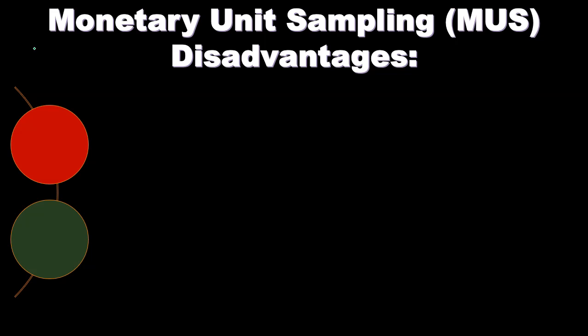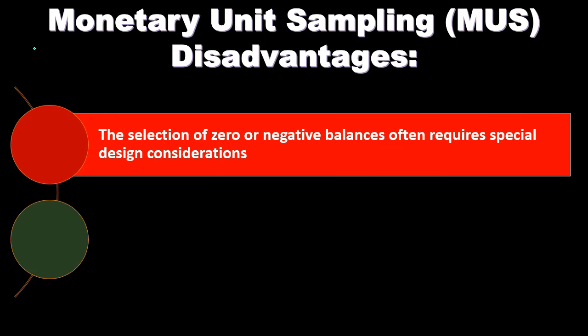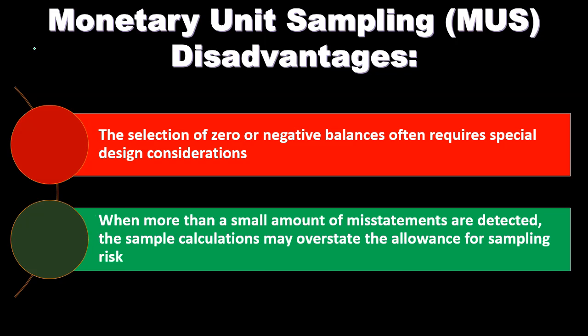Monetary unit sampling disadvantages: the selection of zero or negative balances often requires special design considerations, since a zero or negative balance can throw off the monetary unit calculations. Additionally, when more than a small amount of misstatements are detected, the sample calculations may overstate the allowance for sampling risk.